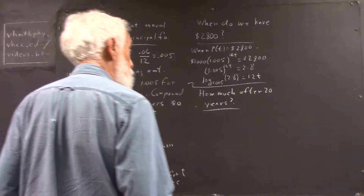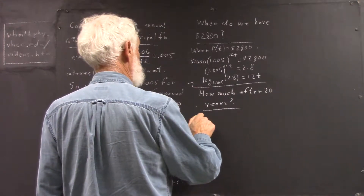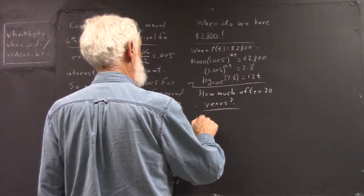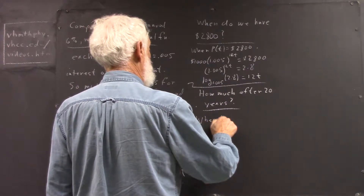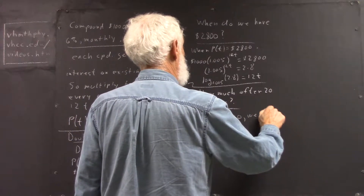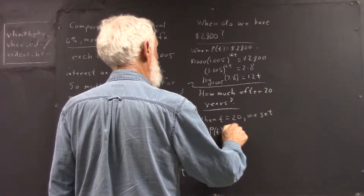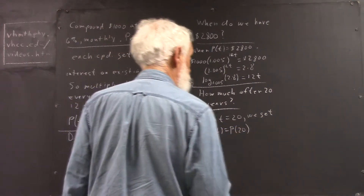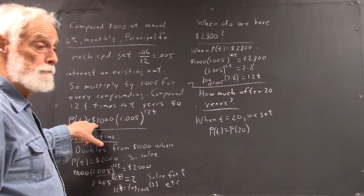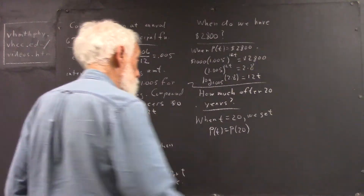How much do we have after 20 years? Well, when t equals 20, we get P of t equals P of 20. Going into the principal function, we've replaced t with 20.